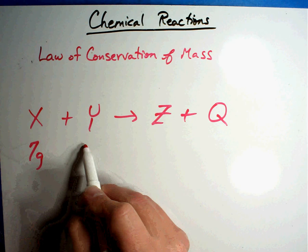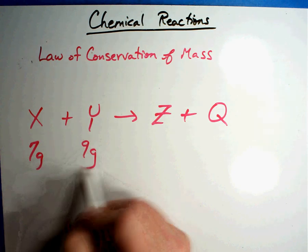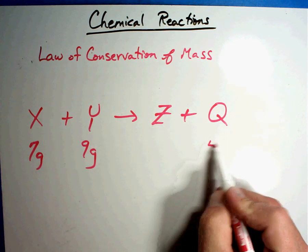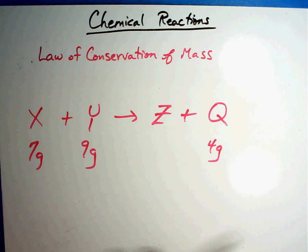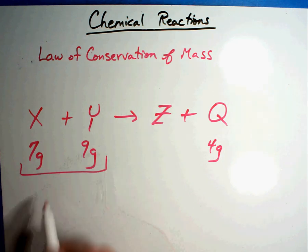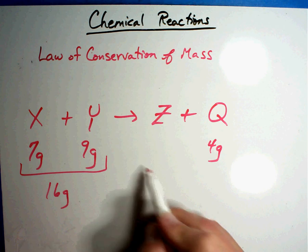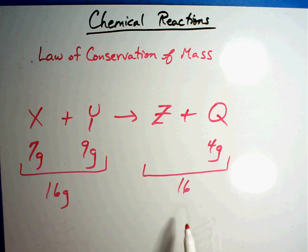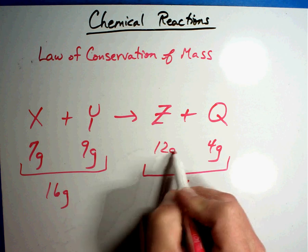Well, 9 and 7 is 16 grams. This side has to equal 16 grams. 16 minus 4... 12 grams is the answer you would look for.